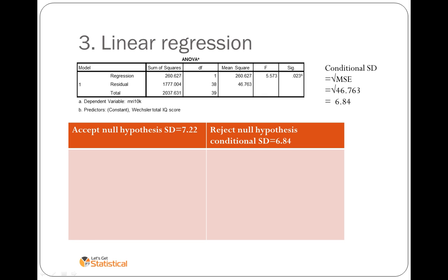If we look at our data and we accept the null hypothesis, which previously told us it had a mean just above 90 and a standard deviation of 7.22, as we move along this straight line, we're going to expect the points to vary on either side with standard deviation of 7.22.